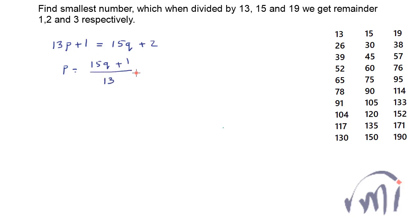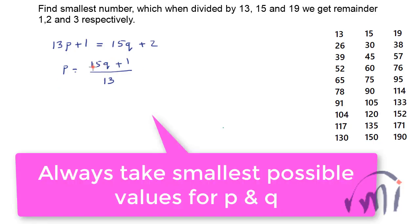So we have one equation but two variables, so what we will do is we will assume certain values for q and try to find the values of p in such a way that both the values p and q are natural numbers.